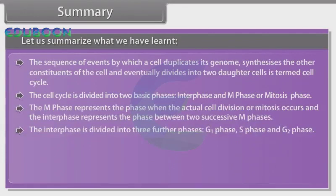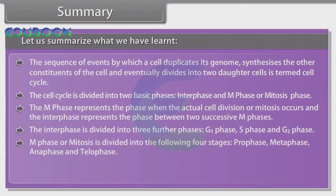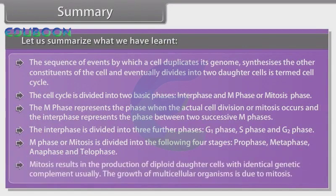M phase or mitosis is divided into the following four stages: prophase, metaphase, anaphase, and telophase. Mitosis results in the production of diploid daughter cells with identical genetic complement. Usually the growth of multicellular organisms is due to mitosis.